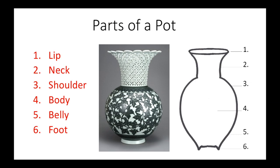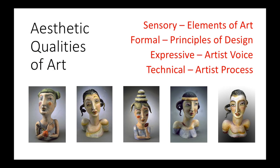Let's begin by identifying the different parts of a pot. There are six parts, and they relate to parts of the human figure: the lip, neck, shoulder, body, belly, and foot. This piece is an example of a pot that consists of all six parts. However, not all pots have all six parts. A teapot, for example, does not typically have a neck, just as a cylindrical bud vase would not have a shoulder or a belly.